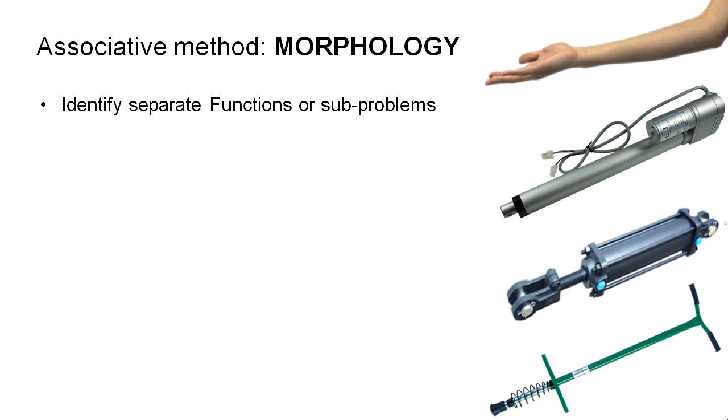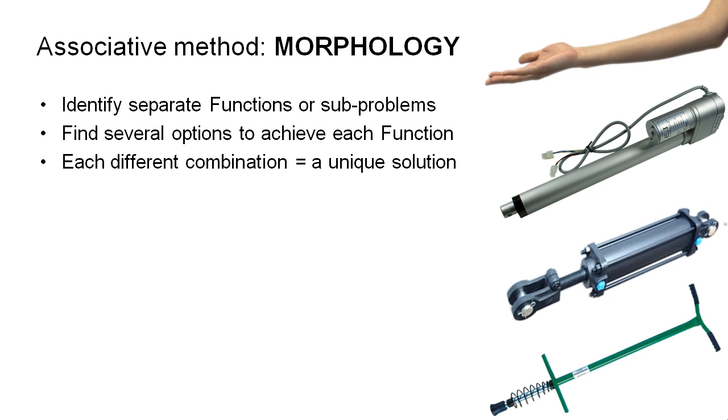The first step in this process is to identify the various functions or sub-problems within your major problem. We've already done this as part of the OFFAS project, so when you get to this stage you should already have a very clear list of functions that your device or your product has to fulfill. The next step is to find or come up with several different options that can achieve each of those individual functions. If you look at the pictures on the right hand side, you'll see that we have a human arm, a linear actuator which is an electric device, a hydraulic ram there, and I've also got a pogo stick. All of these devices could be used to provide a pushing force to an object.